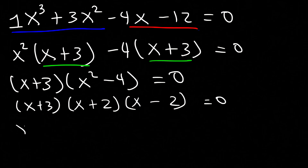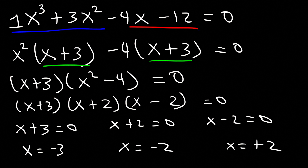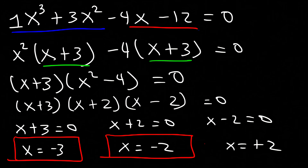At this point we can set each factor equal to zero, and so we're going to get three answers. x is equal to negative 3, negative 2, and positive 2. So that's how you can solve this particular polynomial equation.